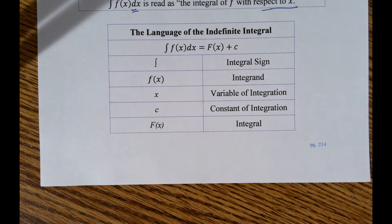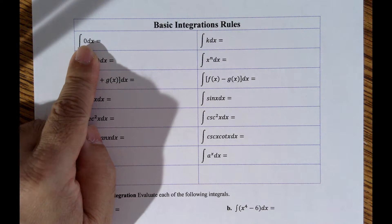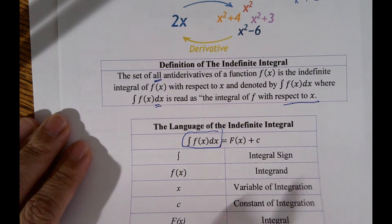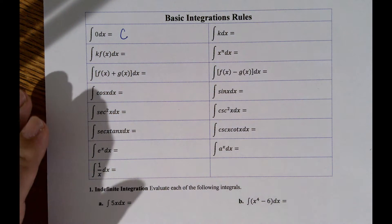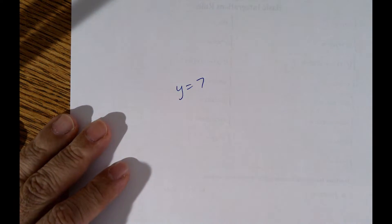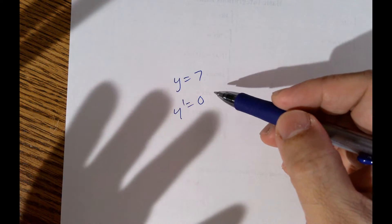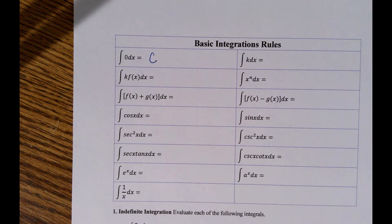Now we're going to do some basic integration rules, on page 215. The integral of 0 dx is some constant C — we don't know what it is. Remember, if you had a function like y equals 7, the derivative is 0. So I have 0 and some constant I don't know, so I put C. C represents some number — it doesn't have to be a whole number, just any number.